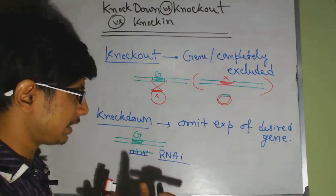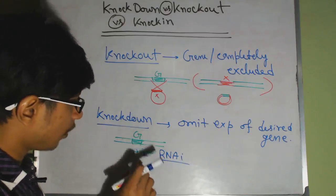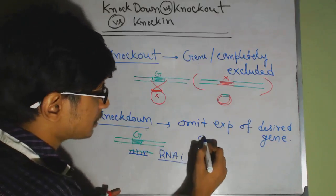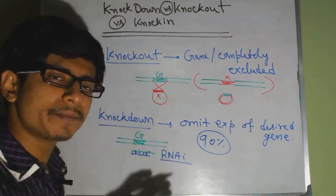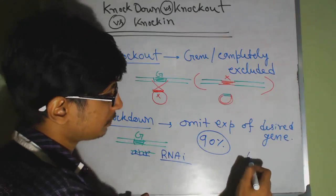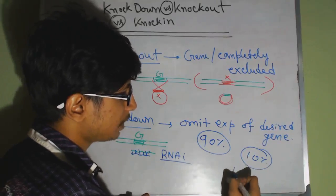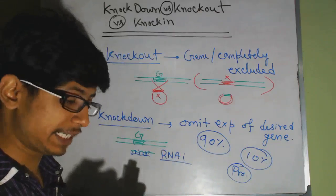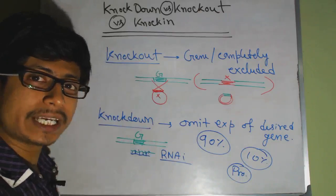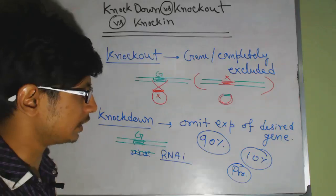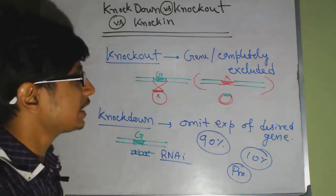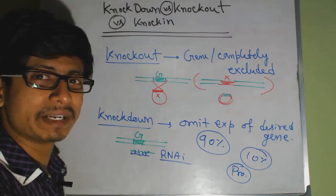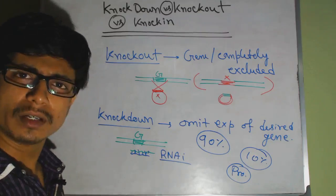However, because the gene is still physically present, some RNA may still be translated into proteins. In practice, knockdown blocks expression about ninety percent of the time, but ten percent of the time the proteins are still made. So it is not a complete deletion — the gene is present but its expression is blocked by RNAi. The expression is reduced but not completely omitted — that is called knockdown.